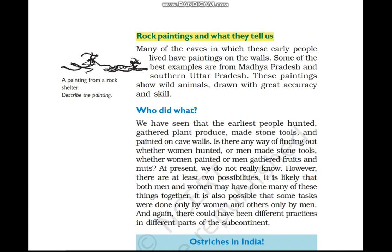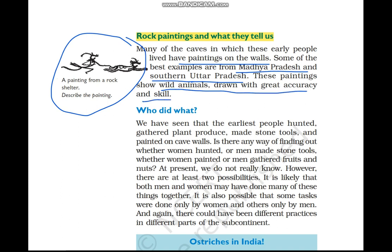Now, rock paintings and what they tell us. As we studied in the previous topics, hunter-gatherers lived in natural caves and rock shelters. Many caves had paintings on the walls — such paintings were found in Madhya Pradesh and southern Uttar Pradesh. These paintings showed how hunter-gatherers were living, with many very detailed and accurate drawings of animals.